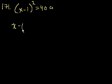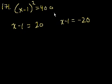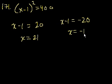x minus 1 squared is equal to 400. So that means that x minus 1 is equal to positive 20, or x minus 1 could equal minus 20. Because minus 20 squared is also 400. If you add 1 to both sides, you get x is equal to 21. In this case, you get x is equal to minus 19.